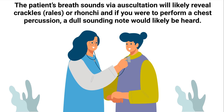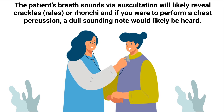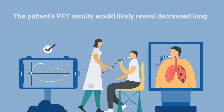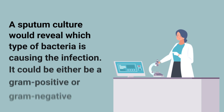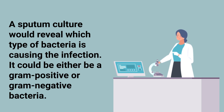The patient's breath sounds via auscultation will likely reveal crackles or rhonchi, and chest percussion would produce a dull-sounding note. PFT results would likely reveal decreased lung volumes and capacities. A sputum culture would reveal which type of bacteria is causing the infection — it could either be a gram-positive or gram-negative bacteria.